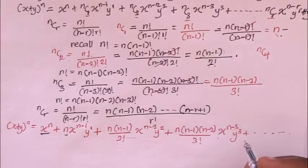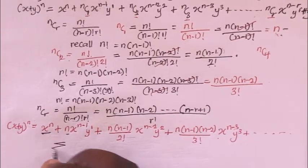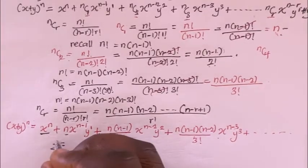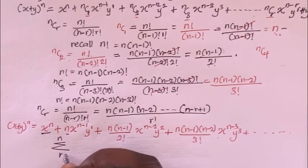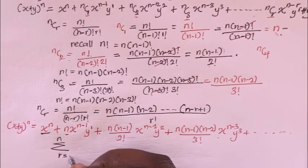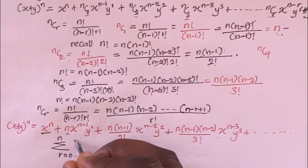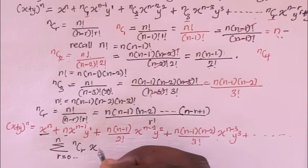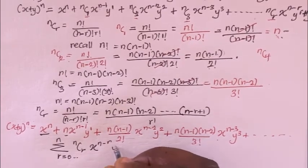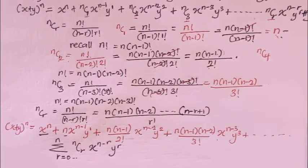Since we have a sum of all terms here, we can express this simply as a summation. That is, the summation of nCr times x to the power of n minus r times y to the power of r, where r starts from 0 upward.